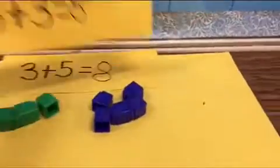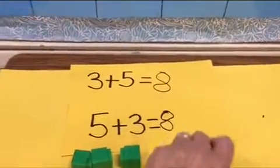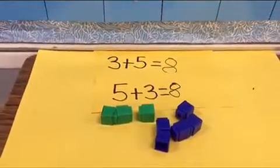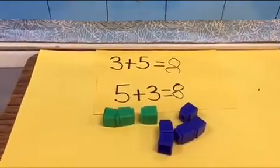I can change the order of my addends but my sum, the whole thing, the total, stays the same.